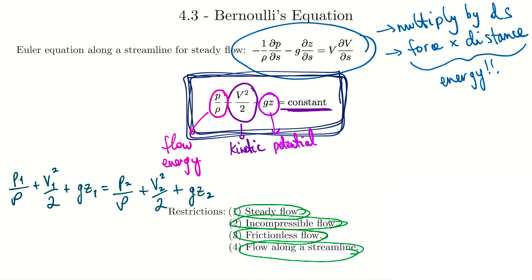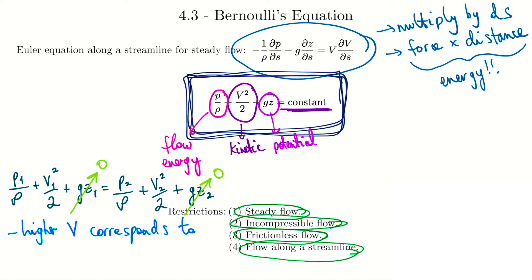Often we don't have much of an elevation change, so in practice we're typically going to get rid of the elevation term. This is often how we're going to use this equation — to relate pressure changes to velocity changes. If you know the pressure and velocity at point one, you can figure out pressure and velocity at point two. The implication of Bernoulli is that because this stays constant, pressure — flow energy — and kinetic energy have to stay balanced. So if pressure goes up, velocity has to go down, and vice versa. It's very important to understand the physical nature of this expression.